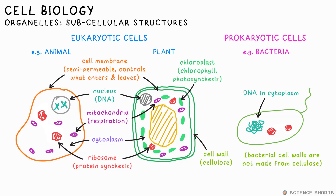Plant cells also contain chloroplasts — that's the site of photosynthesis, and they contain chlorophyll. Plant cells also have a permanent vacuole in which sap is stored.